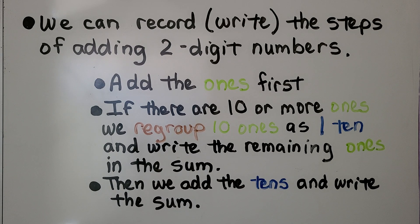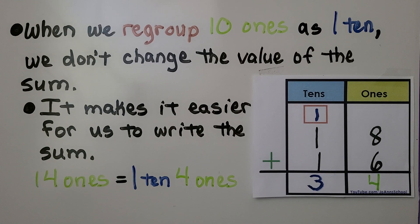We add the ones first. If there are ten or more ones, we regroup ten ones as one ten and write the remaining ones in the sum. Then we add the tens and write the sum. When we regroup ten ones as one ten, we don't change the value of the sum. It makes it easier for us to write the sum.